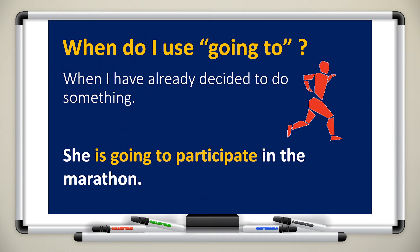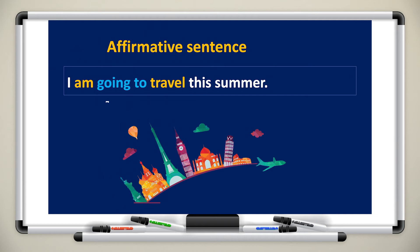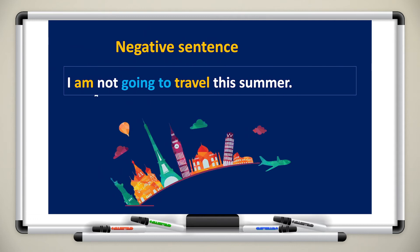For an affirmative sentence using 'going to': 'I am going to travel this summer.' 'I' is the pronoun, 'am' is the verb to be, 'going to' is the future word, 'travel' is the verb in the infinitive, and 'this summer' is the keyword showing this is a future action. To turn this into a negative sentence: 'I am not going to travel this summer.' We add 'not' before 'going to' to make it negative.